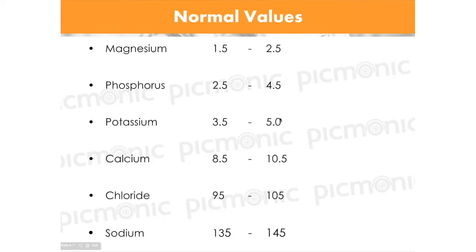Now for hypermagnesemia — one of my favorite Picmonic images. We have this hiker with his magnesium magazine, and he is totally chillaxed, muscles relaxed. A high magnesium level means magnesium's function of muscle relaxation is amplified. So what are you going to see if all the muscles are relaxed? Neuronal excitability is also going to be relaxed.